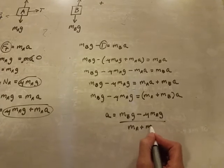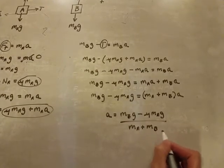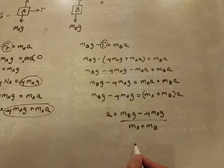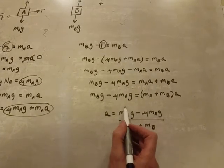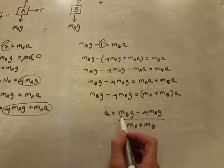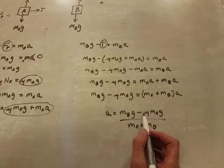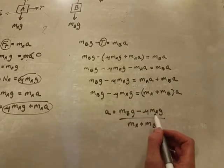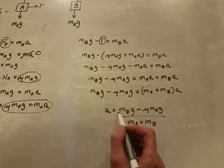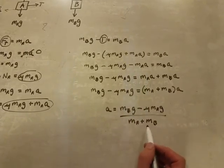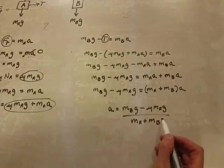If we were doing this the short way with the net force divided by the total mass equals acceleration, this is what's causing the acceleration, the MBG, but there's friction, so we subtract out the frictional force. That is the net force causing the acceleration, and this is the total mass that's accelerating.